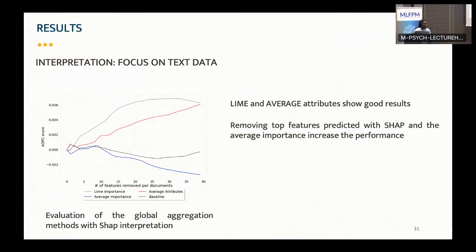A question was asked whether integrating images like mammography is being considered. The presenter replied that while there are 15,000 patients in the database, mammography is only available for around 300 of them, making deep learning difficult with such a small sample. They are looking for multimodal datasets with more imaging instances, but for now the project focuses on text and structured data.